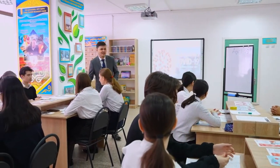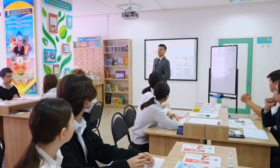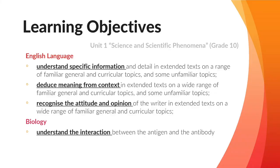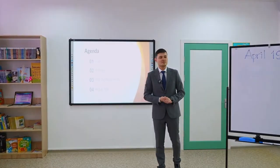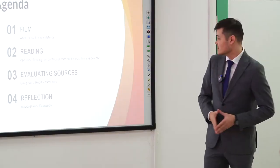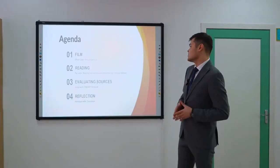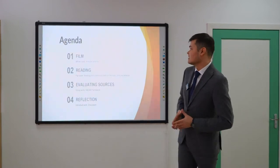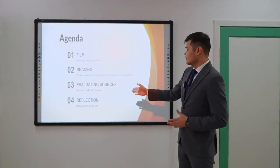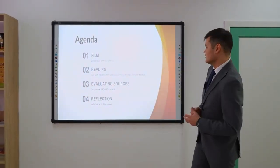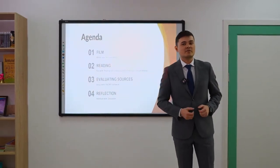So today in this lesson, we are going to talk about immune defense and coronavirus disease. Let's move on to the objectives of today's lesson. First, we are going to watch a short film on the topic immune defense. Then we are going to read in pairs — we're going to read the text on the same topic and understand the main idea. Then we are going to evaluate sources using the framework RADAR. And finally, at the end of the lesson, you will be able to reflect on today's lesson.